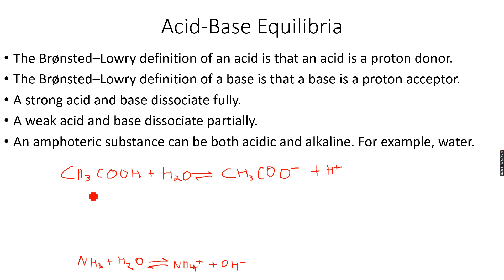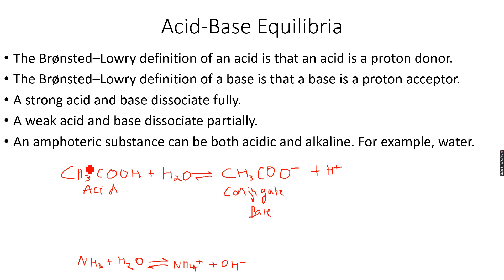So if CH3COOH is an acid because it has donated a proton, then CH3COO- is its conjugate base — when the acid donates a proton to H2O, it forms CH3COO-. Ethanoic acid is an acid because it donates a proton, and when it donates that proton it forms its conjugate base.